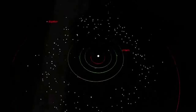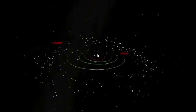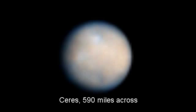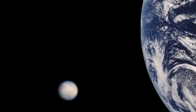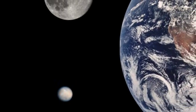The largest object in the asteroid belt, between the orbits of Mars and Jupiter, is Ceres. It is about 600 miles across and could be described as a planetoid. This is what it would look like next to the Earth and our Moon.